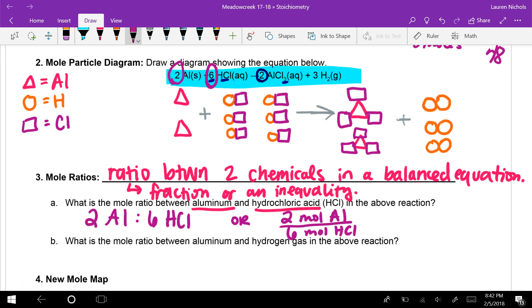So if we're going to look at B, it says what is the mole ratio between aluminum and hydrogen gas in the above reaction? So again, we have aluminum, but now we have hydrogen gas. So aluminum is still two aluminums, and hydrogen gas has a coefficient of three. So we have three hydrogens. And again, we could also write it as the fraction. So two moles of aluminum for every three moles of hydrogen.